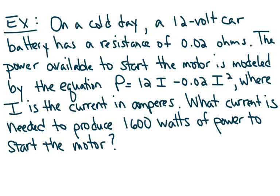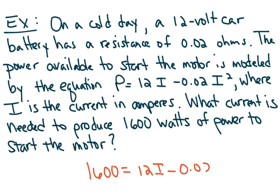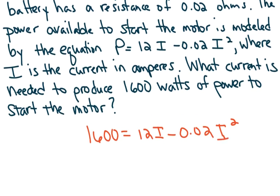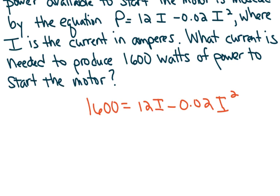Let's do one more example with an application problem. On a cold day, a 12-volt car battery has a resistance of 0.02 ohms. The power available to start the motor is modeled by P equals 12i minus 0.02i squared, where i is the current in amperes. What current is needed to produce 1,600 watts of power? Since 1,600 watts is the power, we plug in 1,600 for P, giving us a quadratic equation. When a quadratic has decimals, use the quadratic formula — but first, make sure the equation equals 0, and identify a, b, and c.